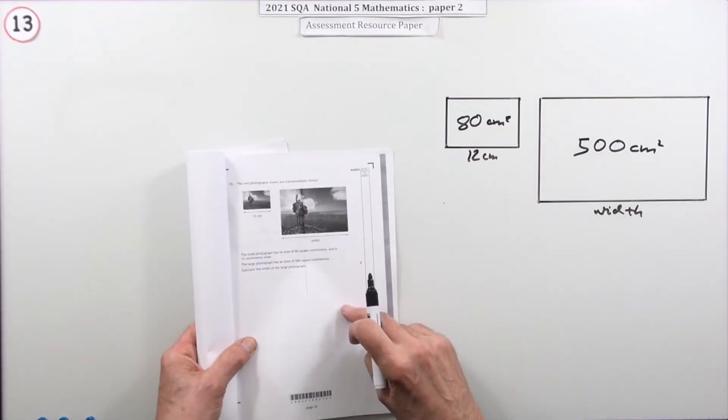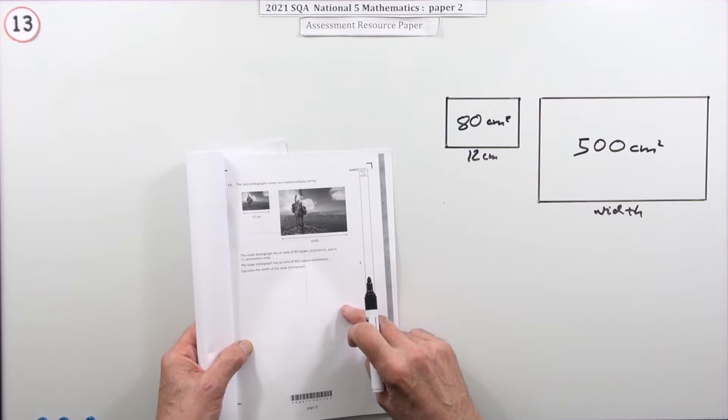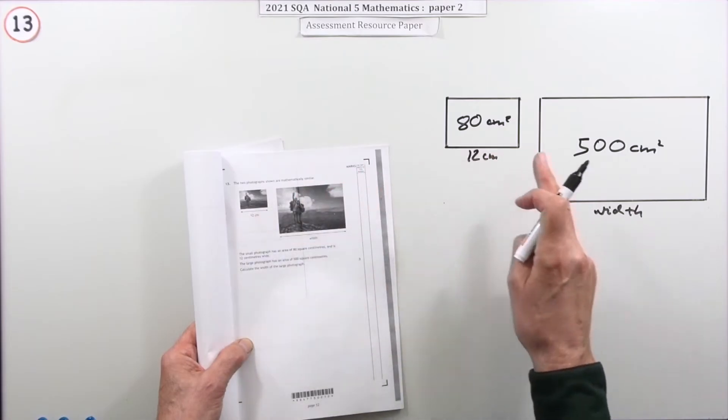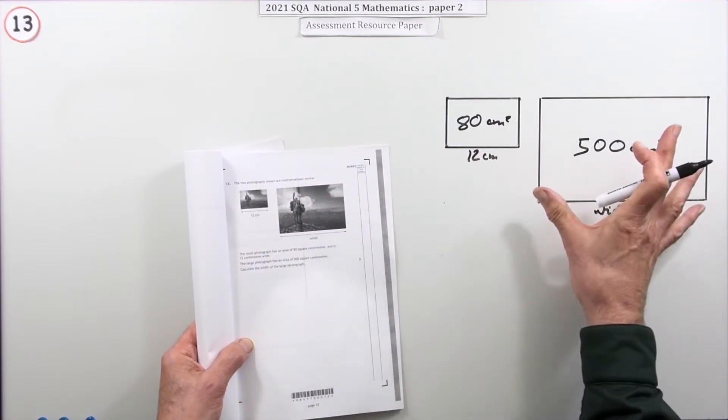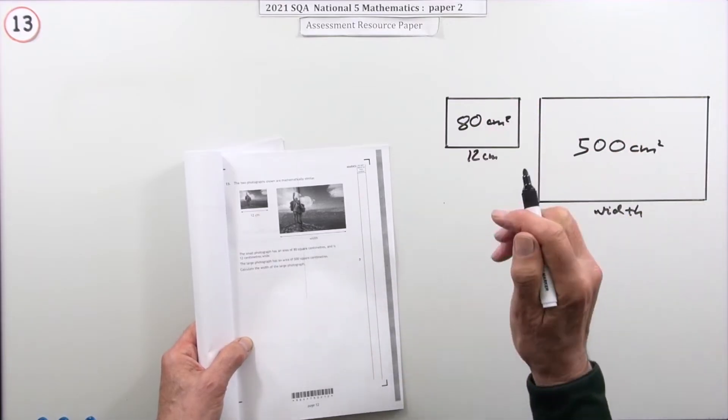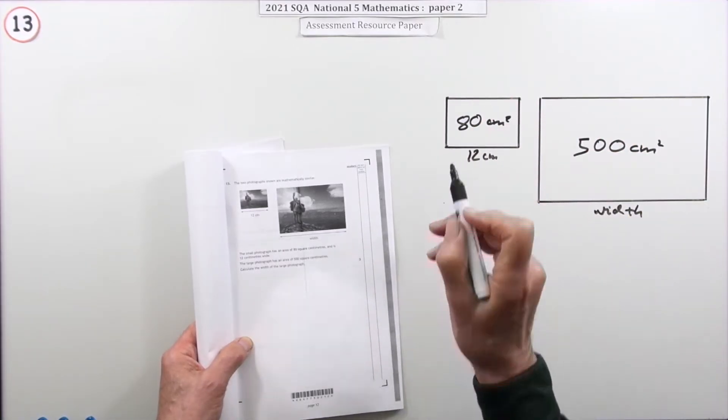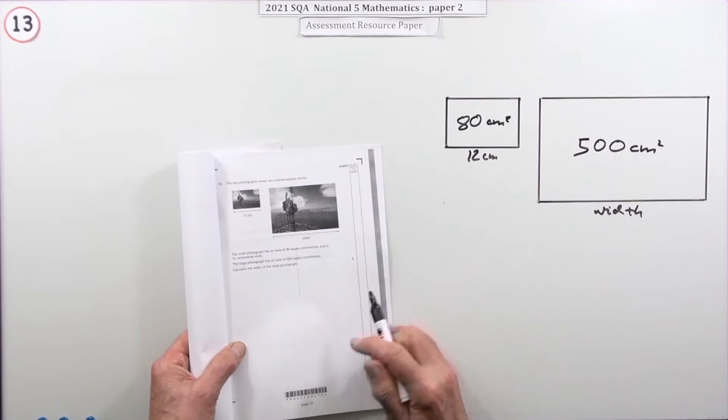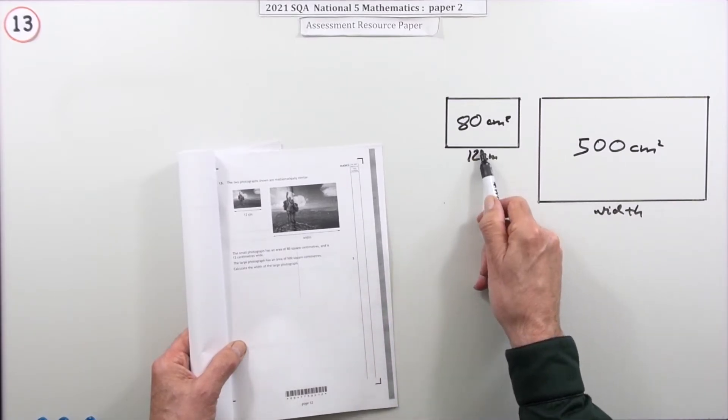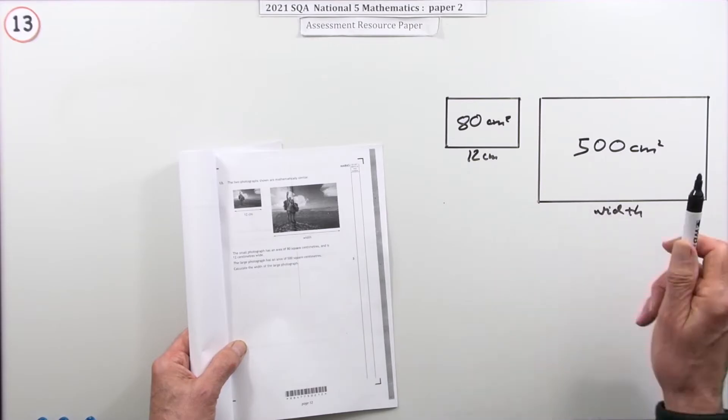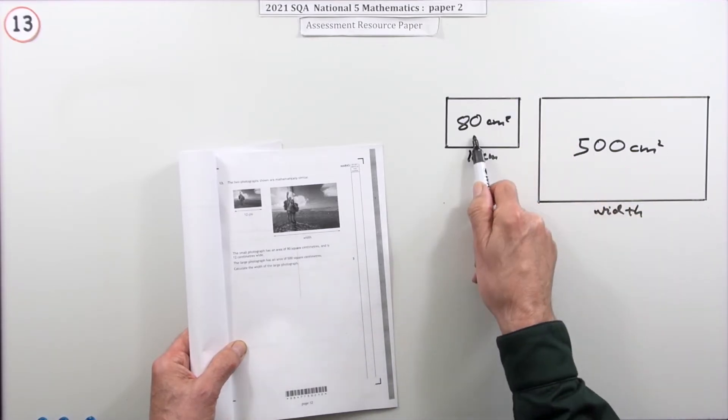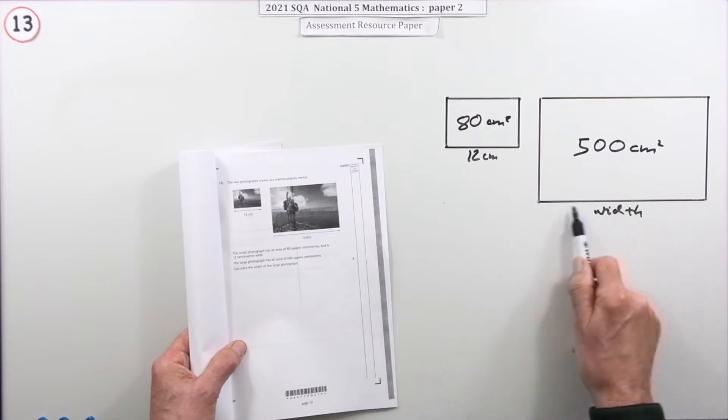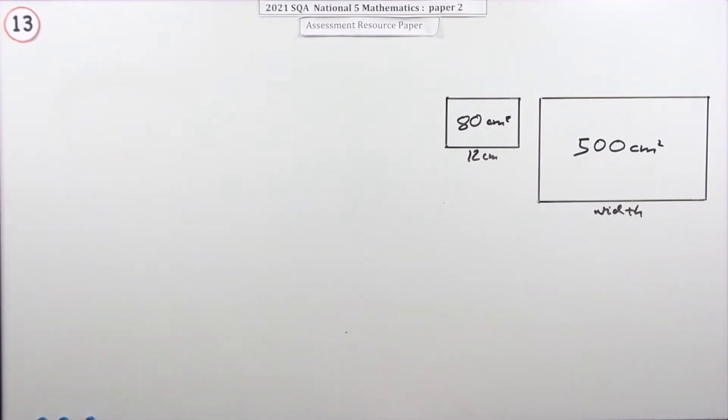Number 13 from paper 2, the 2021 National 5 resource, is a 3-mark question on similar shapes. The two photographs are mathematically similar, meaning one's an exact enlargement or reduction of the other. Corresponding sides are in the same ratio, and corresponding areas are also in the same ratio, but that's a different ratio. The small photograph is 12 centimeters wide with an area of 80 square centimeters. The larger one is 500 square centimeters. You have to calculate this width for three marks.